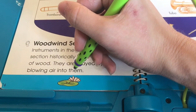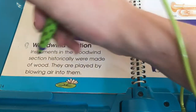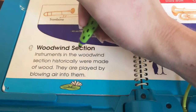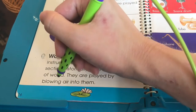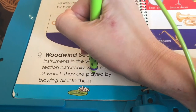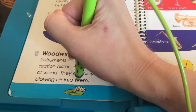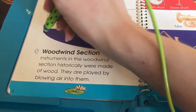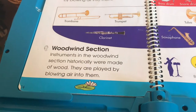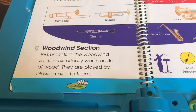I touched the word 'them.' By woodwind blowing — they are played by blowing air into them. Woodwind section: instruments in the woodwind section historically were made of wood. They are played by blowing air into them.